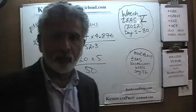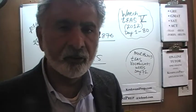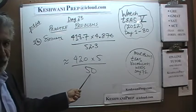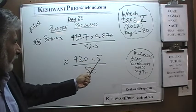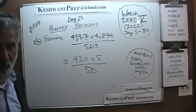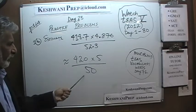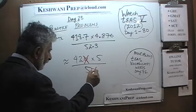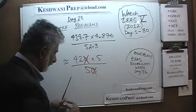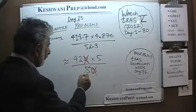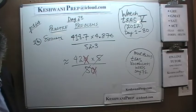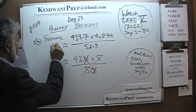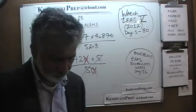The whole idea of approximation is to make the calculation as fast as possible. Let's divide top and bottom by 10 — this zero drops out. Next, let's divide top and bottom by 5. We are done. The answer to this quantity is 42 — this quantity is approximately equal to 42. And that's all there is.